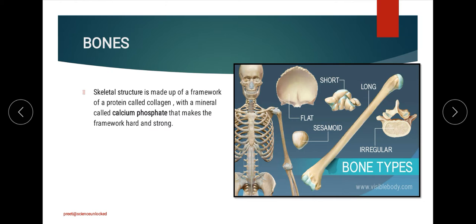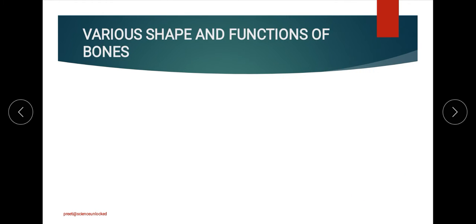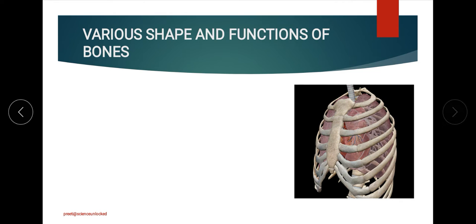A specific protein called collagen helps in the formation of bone structure. As discussed in previous sessions, the adult human body is made up of 206 bones, and all these different bones have their specific kinds of functions. The different shapes and functions of bones are interrelated.